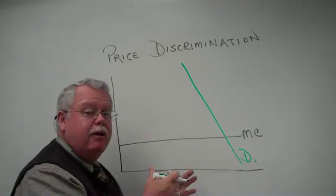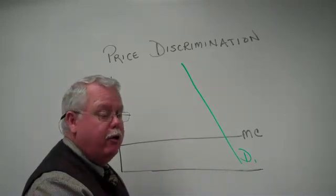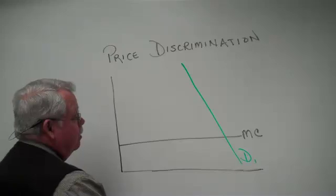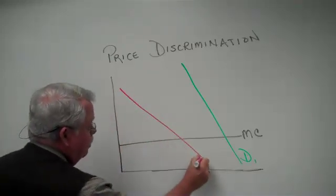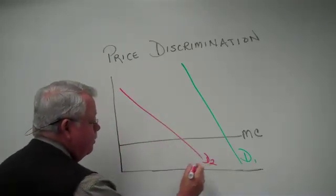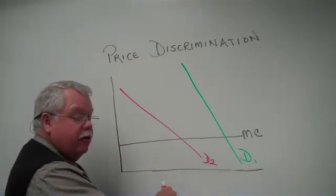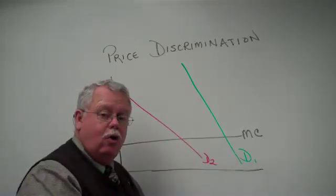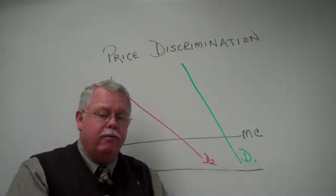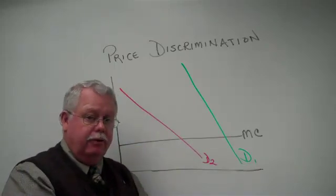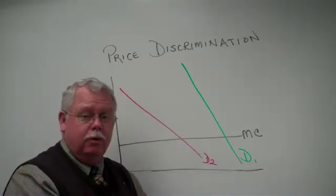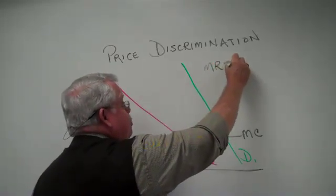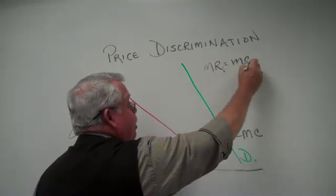Maybe these are the evening customers for your theater — the ones that show up later in the evening. Then there is also market number two, with slightly more elastic demand. Maybe not as many of them in terms of quantity. Given a constant marginal cost, how can we maximize profit in each market? We have to remember the profit-maximizing rule: pick the quantity where marginal revenue equals marginal cost for that market.